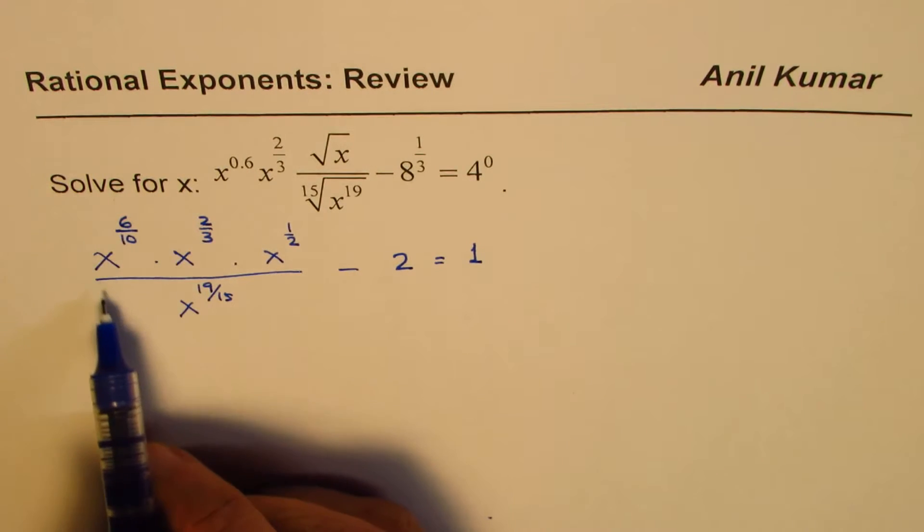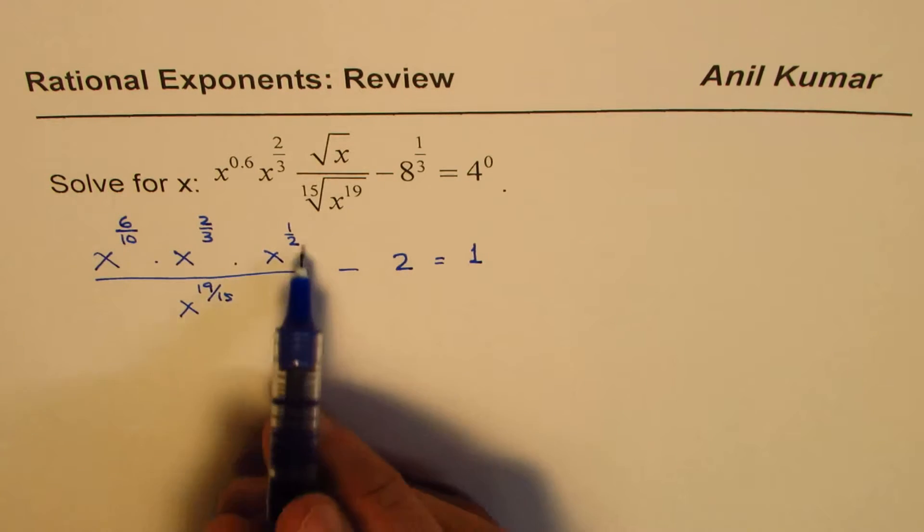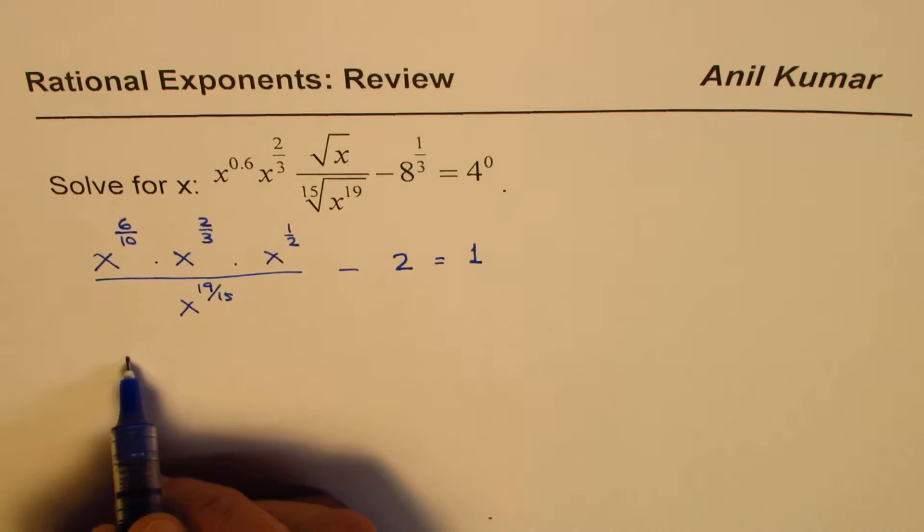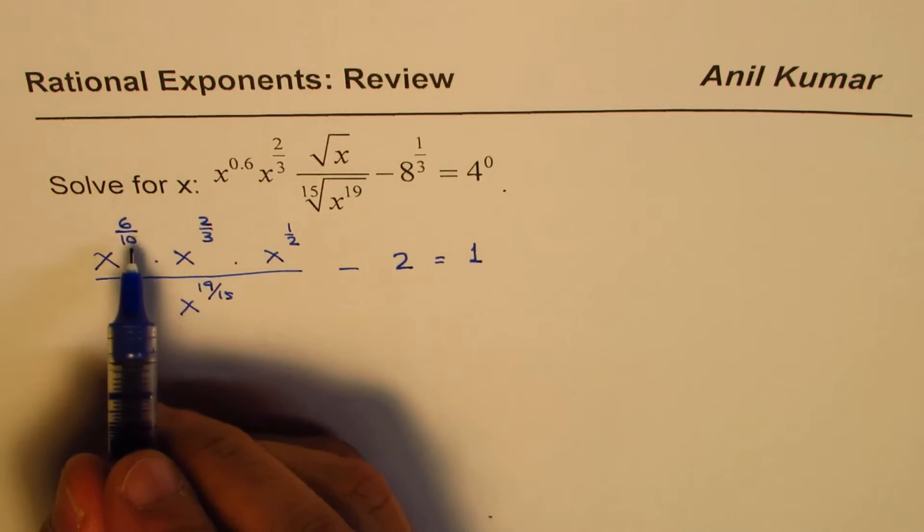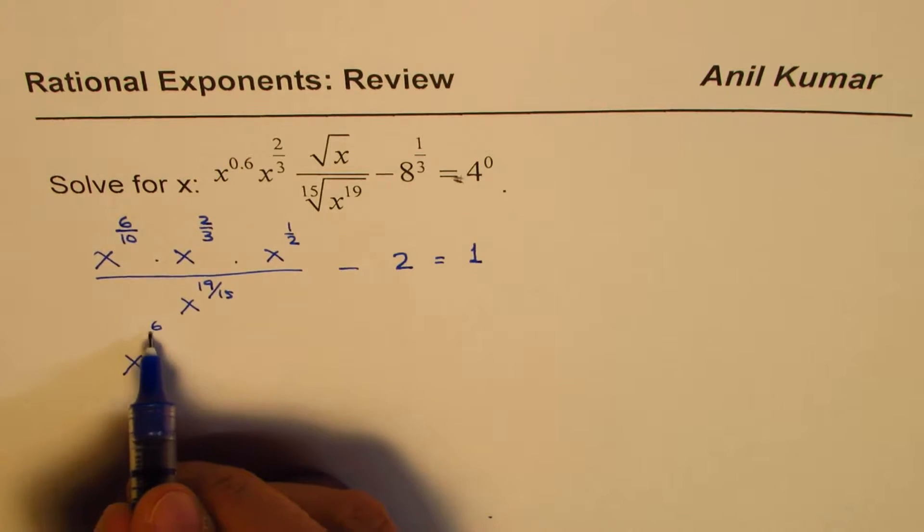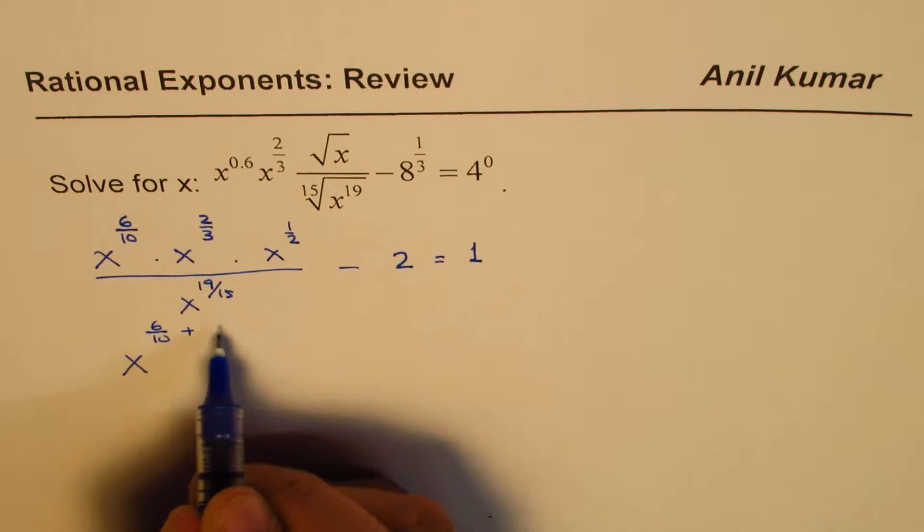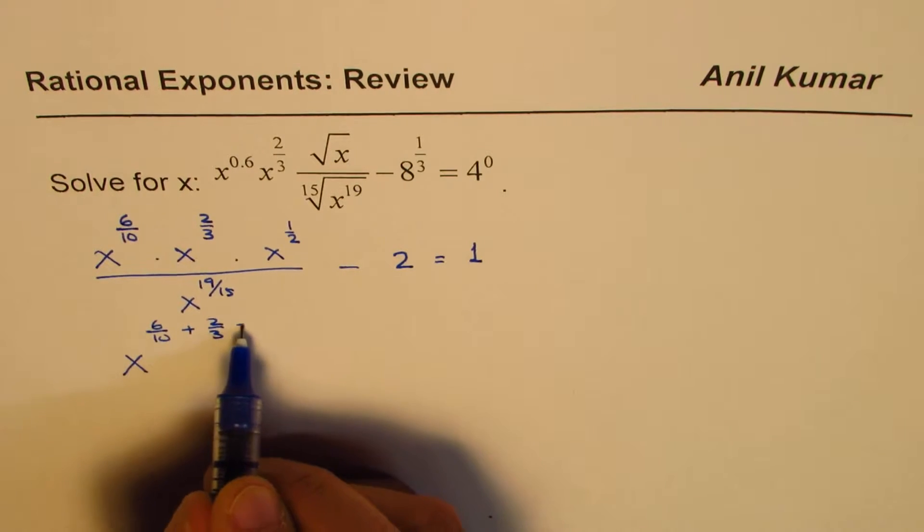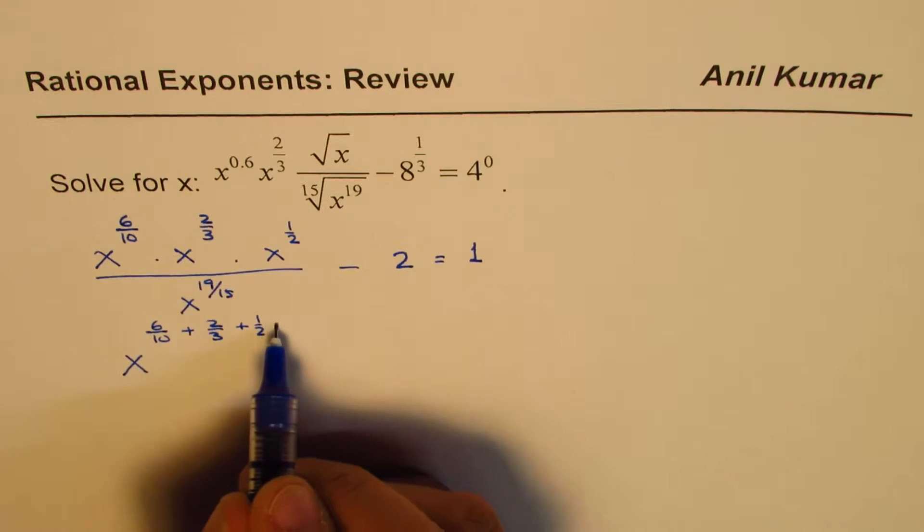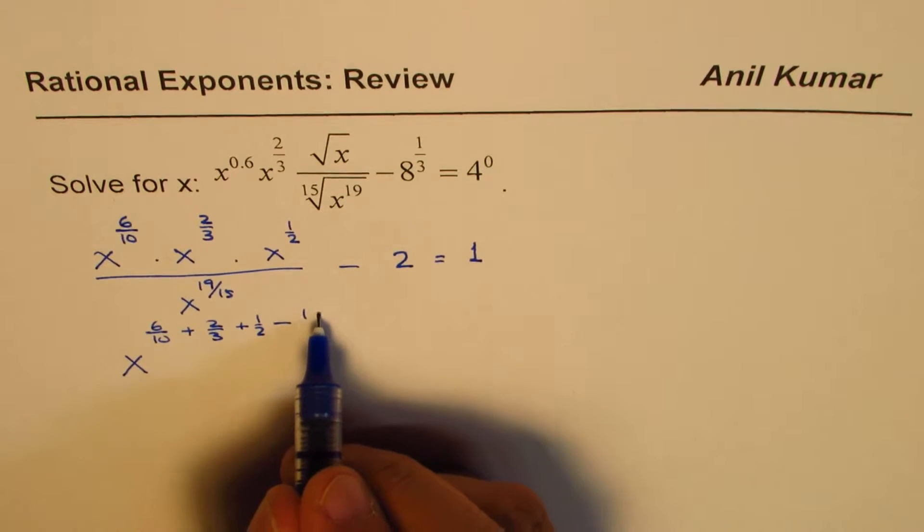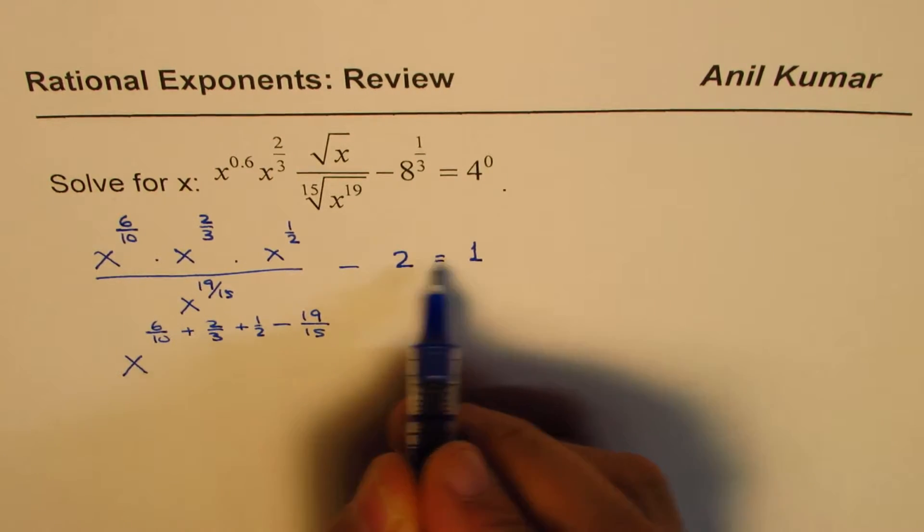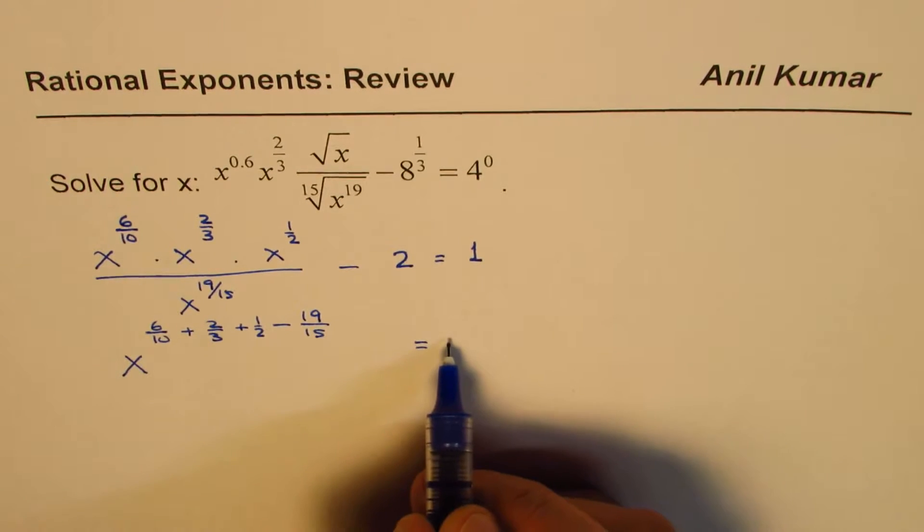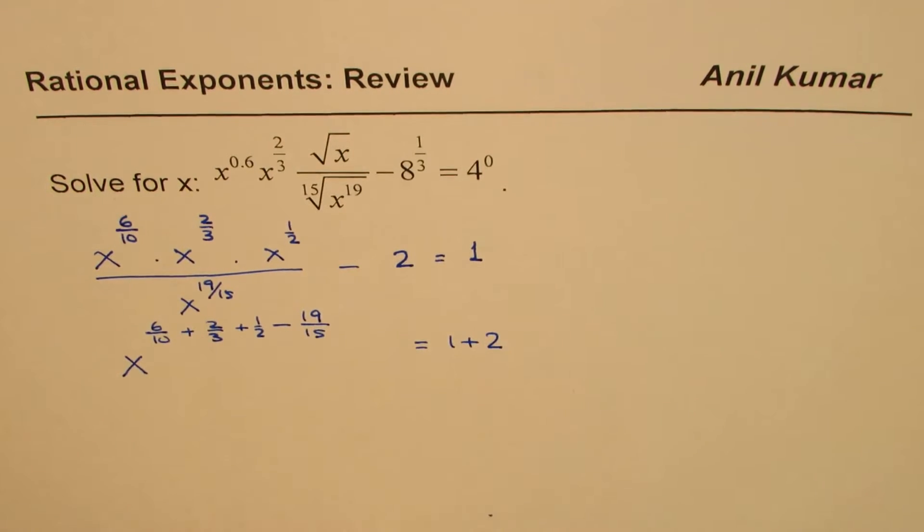Now we'll combine all these x terms. We have x to the power of, we'll add the exponents: 6/10 plus 2/3 plus 1/2, and minus, since this is to be divided, 19/15. Taking the minus 2 to the right side, we get 1 plus 2.